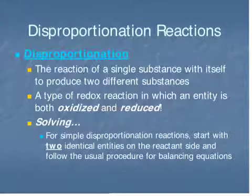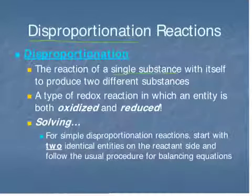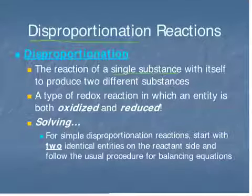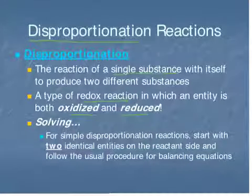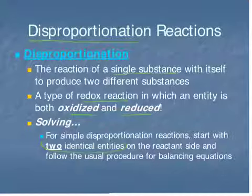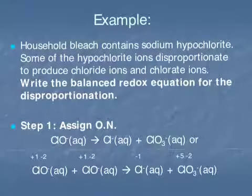Next, we'll talk about the phenomenon of disproportionation. This is when a single substance reacts with itself to produce 2 different substances — not a single molecule breaking apart, but one molecule of a chemical reacting with another molecule of the same chemical to give 2 different products. This is a redox reaction where one chemical is both oxidized and reduced. To solve such a problem, we write 2 identical molecules on the reactant side and then use our regular balancing procedures.